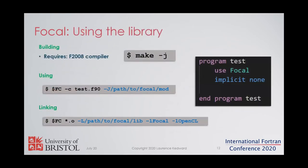Using the library is very straightforward. We can compile it using make, then use it in our code with the syntax shown here. Then we compile and link our program as usual, except we link against the compiled Focal library and also against our OpenCL implementation.